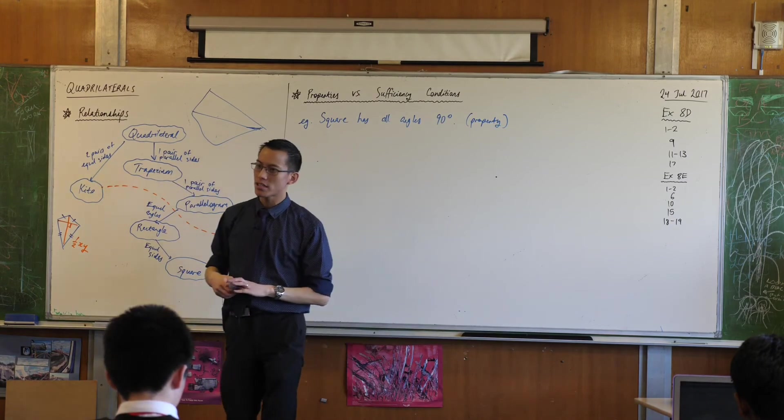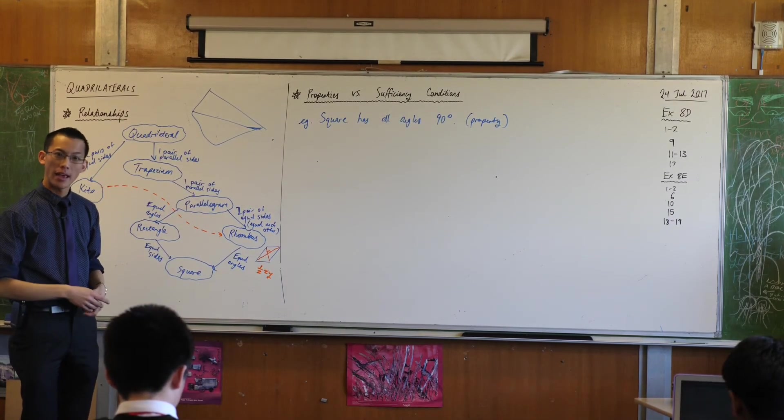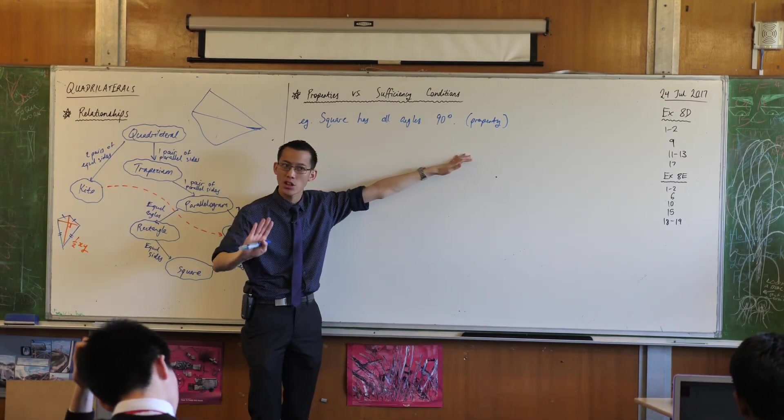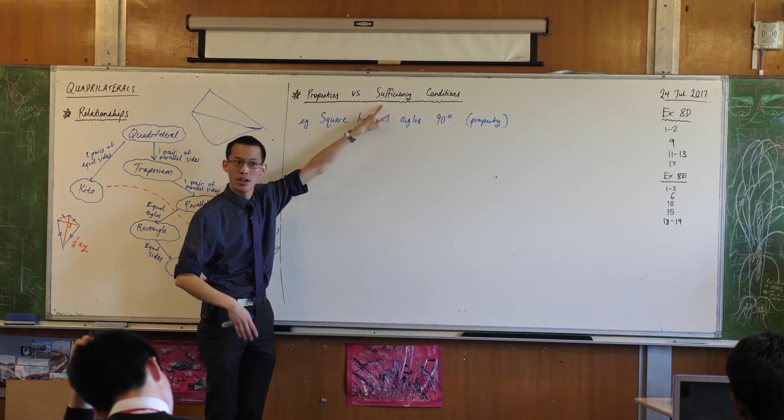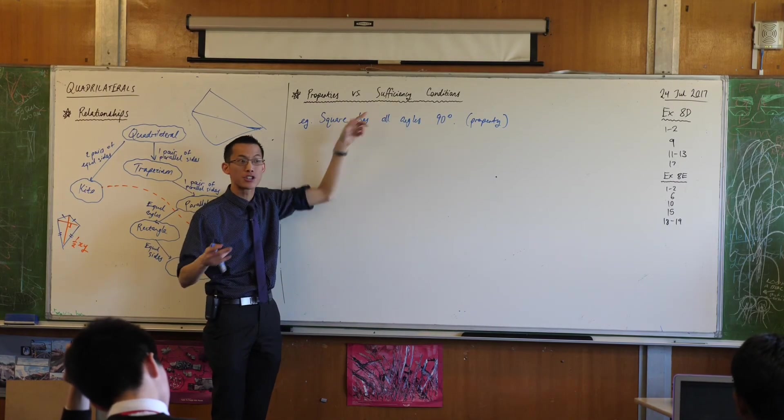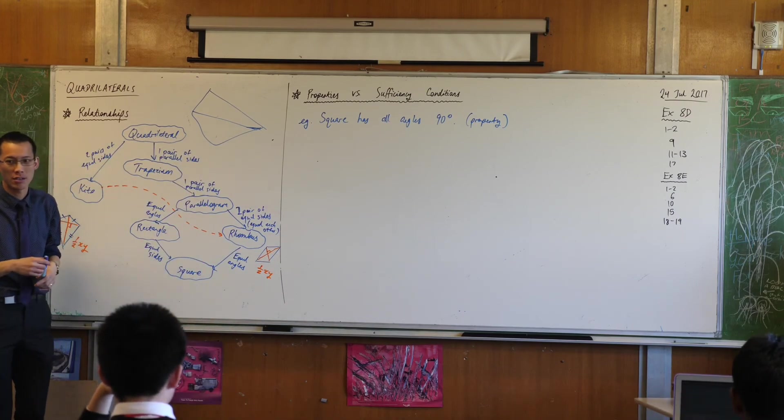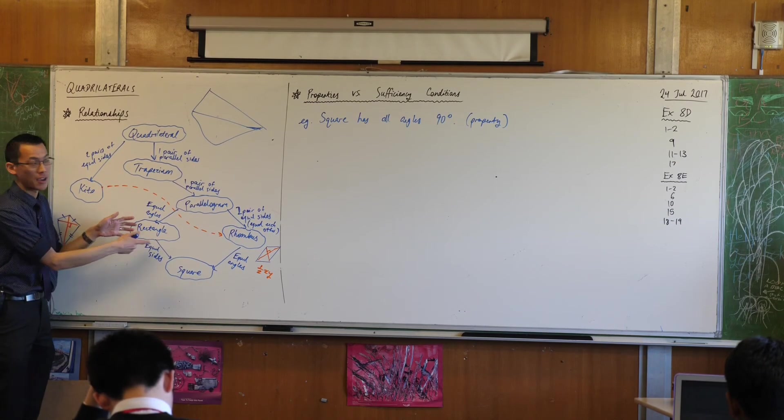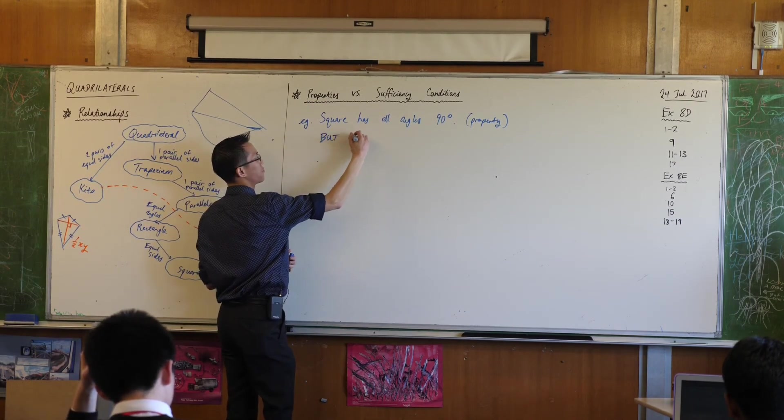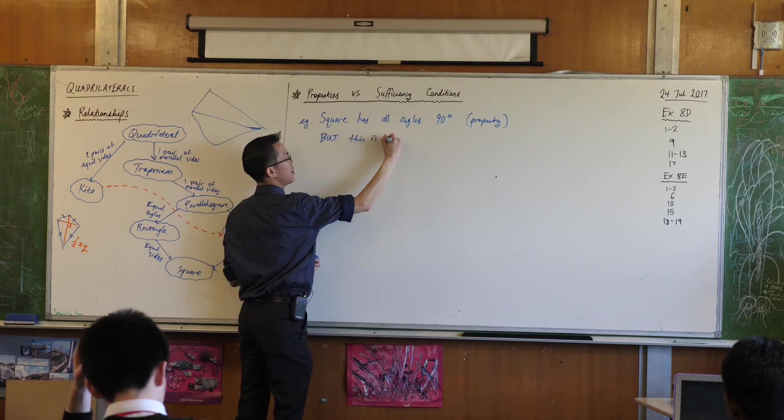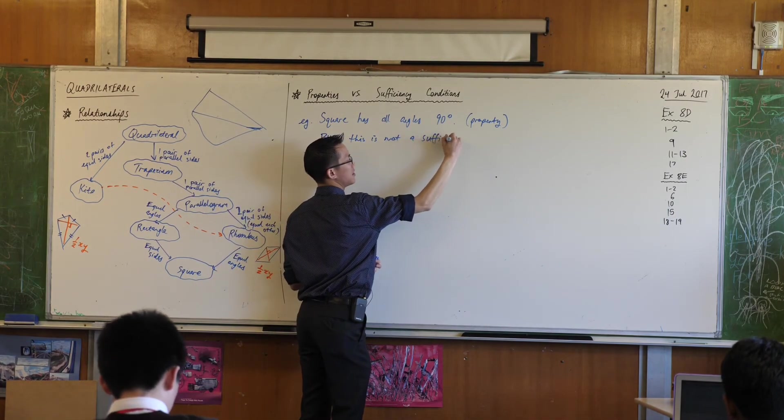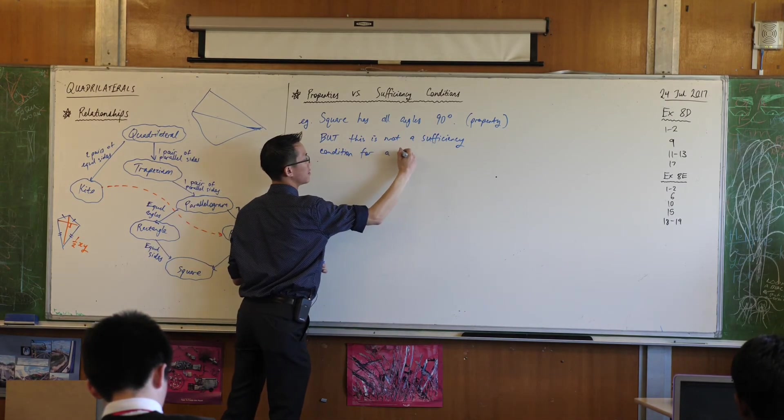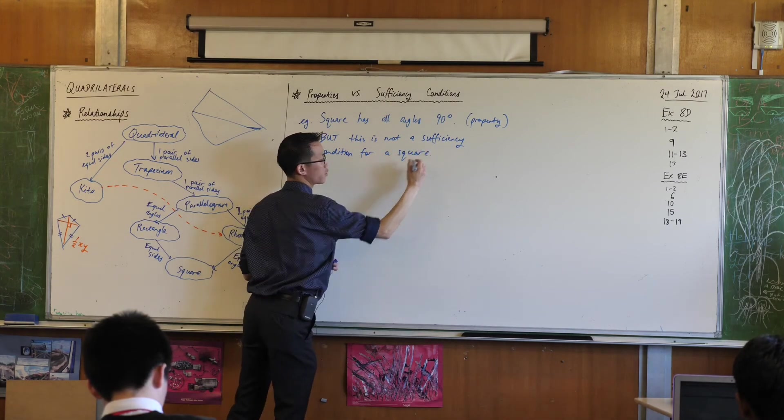But this is not a sufficiency condition for a square. Think about it. If you have a shape and you don't know what it is, and you prove that all its angles are 90 degrees, that's not enough. That's not sufficient to prove that it's a square. Do you see that? I don't know enough yet. What have I proven if all the angles are 90 degrees? I've proven that it's a rectangle because that's part of the essential nature of that shape. So I guess I would say, but this is not a sufficiency condition for a square.